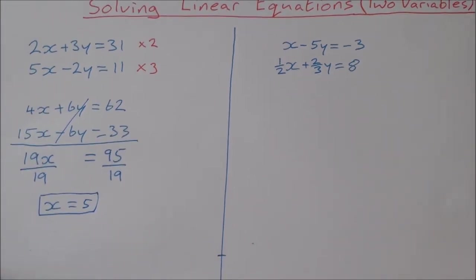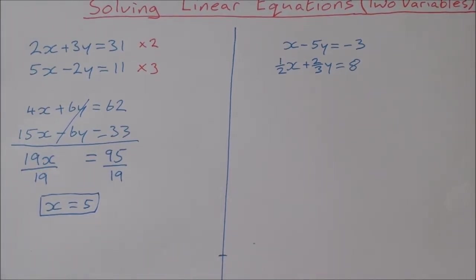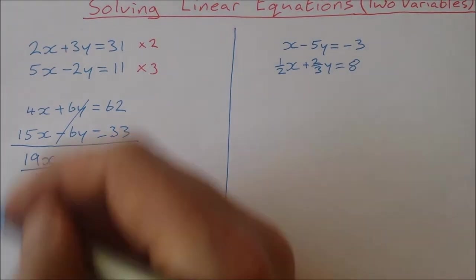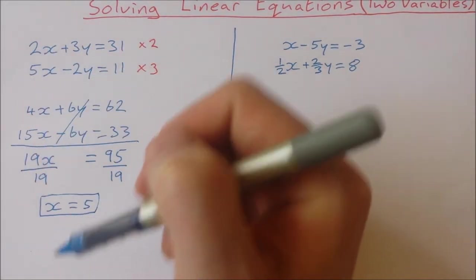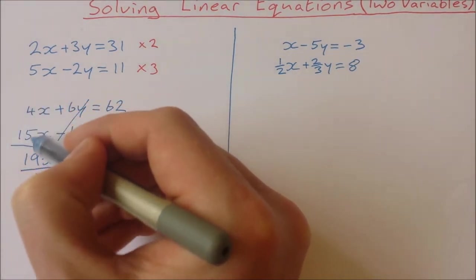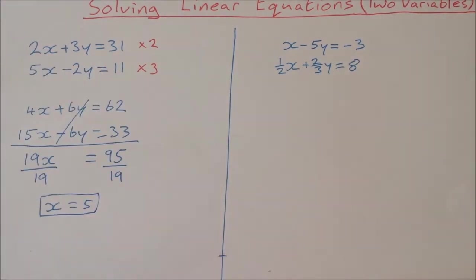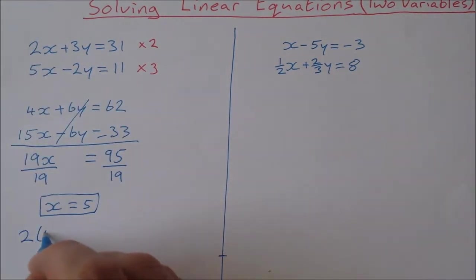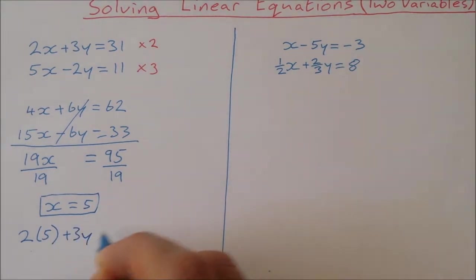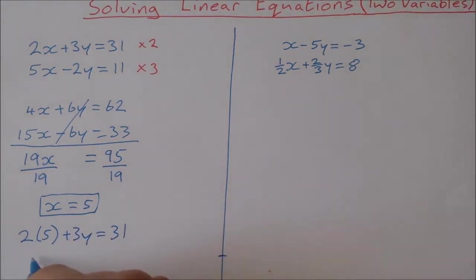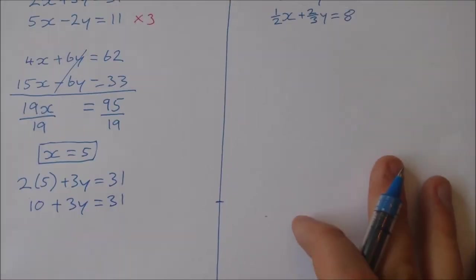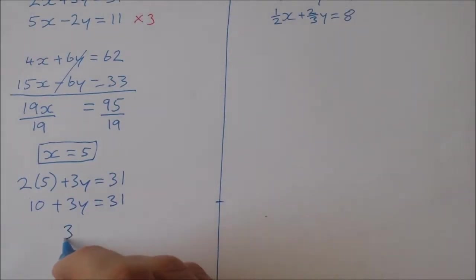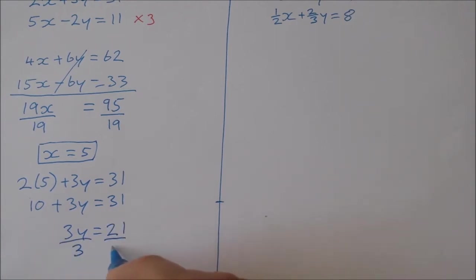That's my first value, x equals 5, and that applies to both equations. Now I need to find the value for y, so I choose either equation. Taking the first equation: 2 times 5 plus 3y equals 31. That's 10 plus 3y equals 31. Take 10 away from both sides: 3y equals 21. Divide both sides by 3 and y is equal to 7.